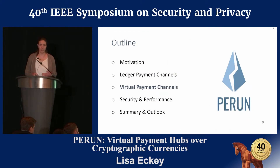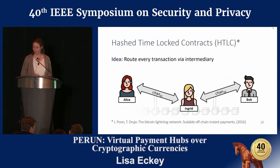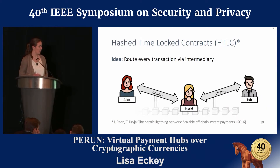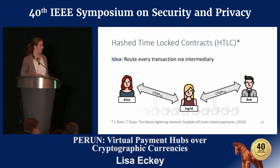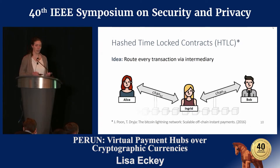Now let's look at how we can build a virtual payment channel from two existing ledger payment channels. This has also been explored in the literature, most notably in the Bitcoin Lightning Network paper, which considered how to route a transaction over an intermediary. Here the intermediary is called Ingrid. We have two channels: one connecting Alice and Ingrid, and one connecting Ingrid and Bob, and we can use her to route a payment.